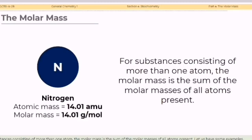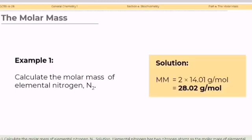For substances consisting of more than one atom, the molar mass is the sum of the molar masses of all atoms present. Let's have some examples. Example number one. Calculate the molar mass of elemental nitrogen with a chemical symbol of N2.